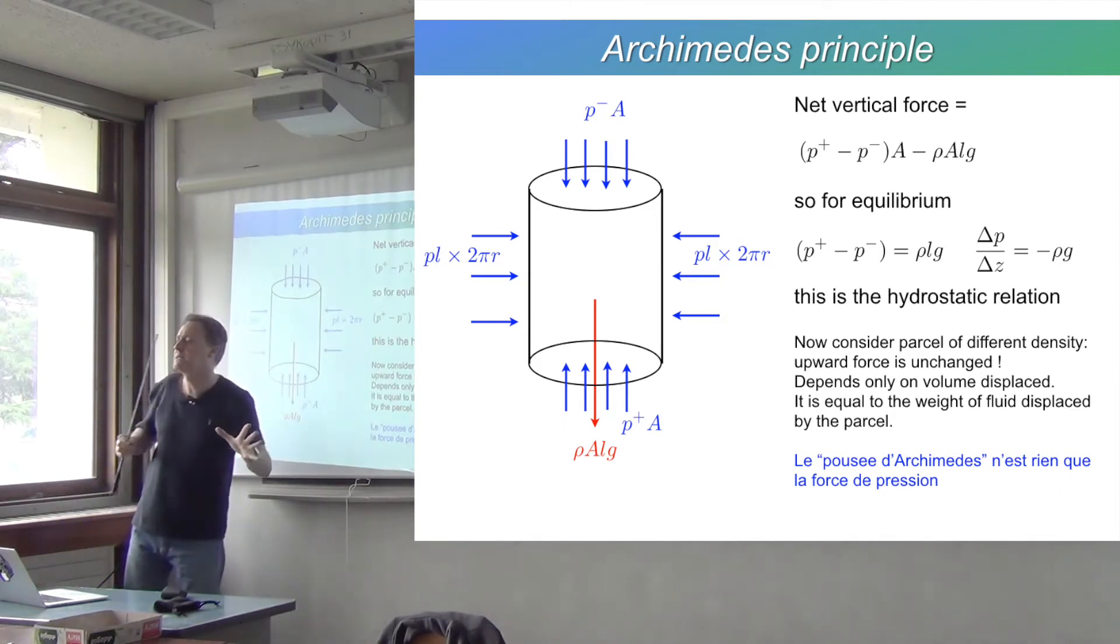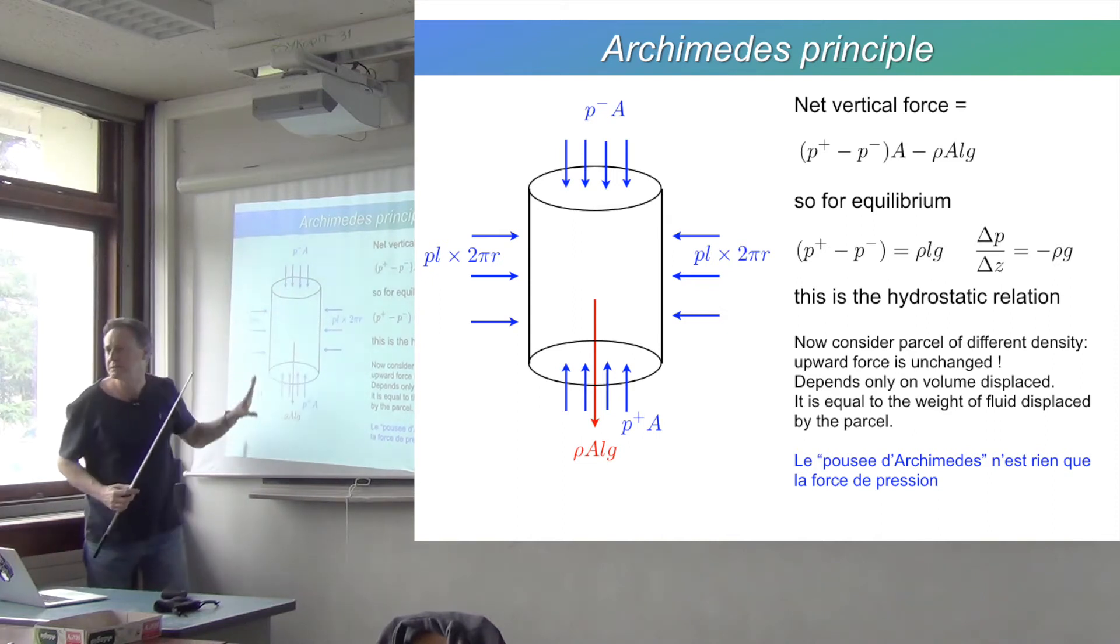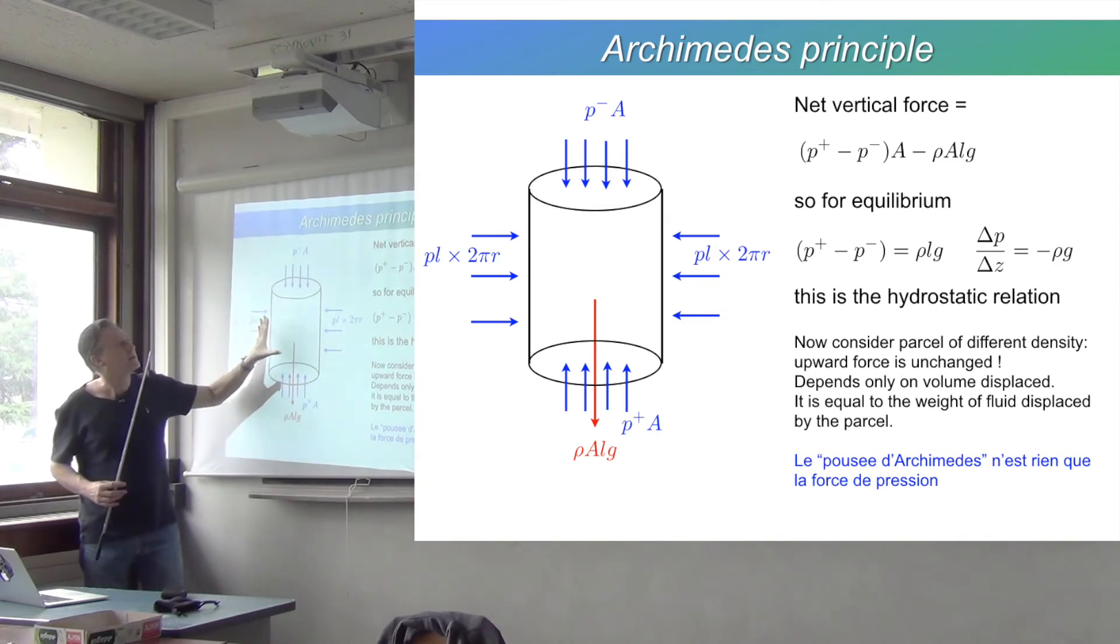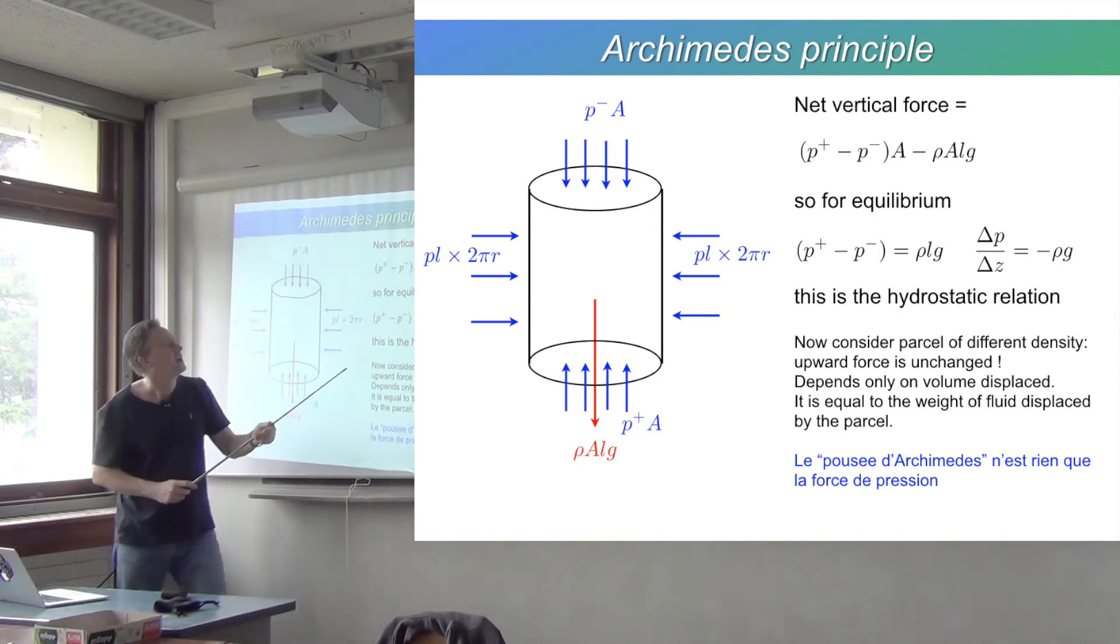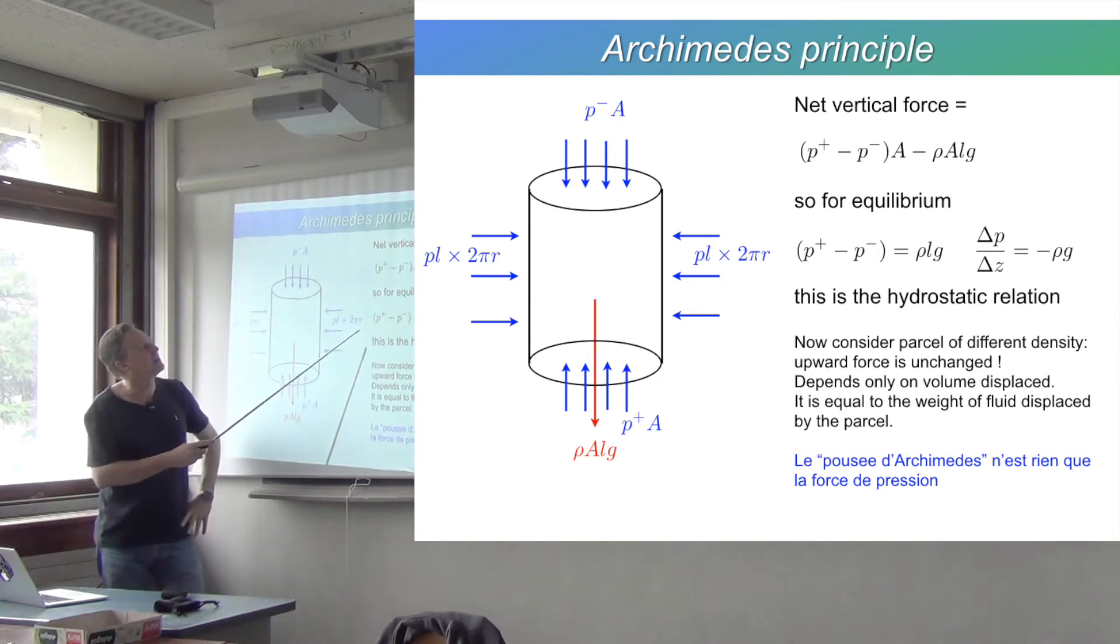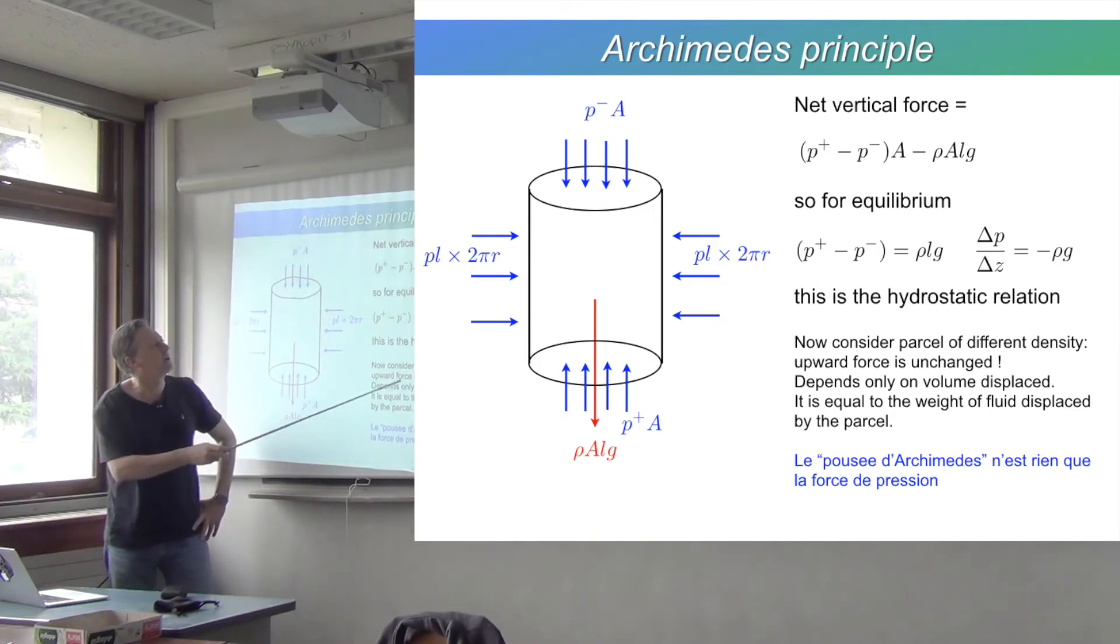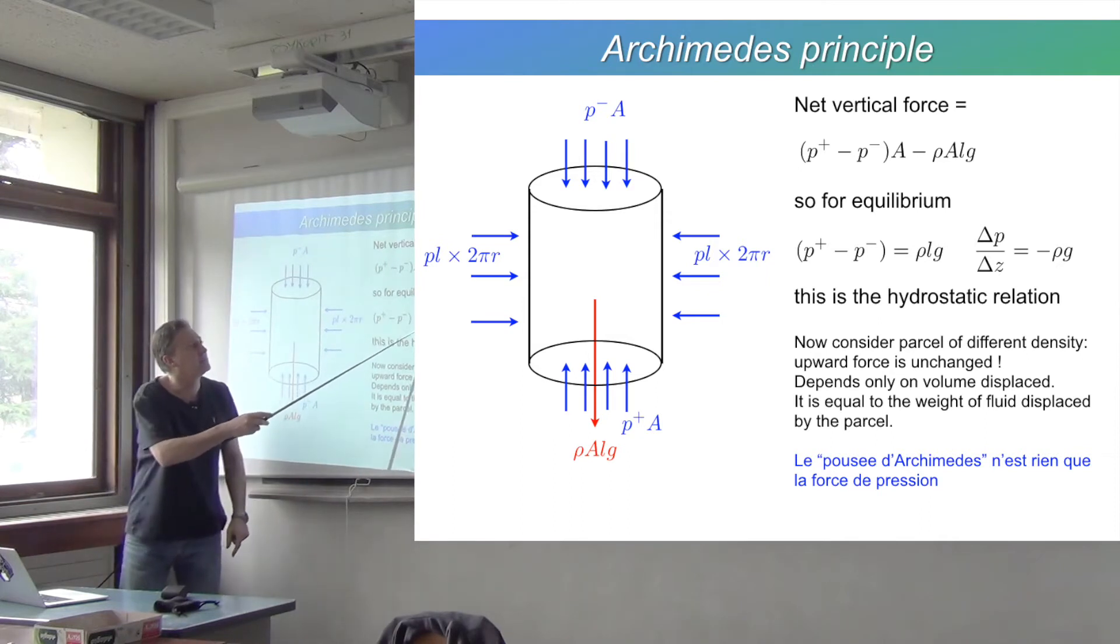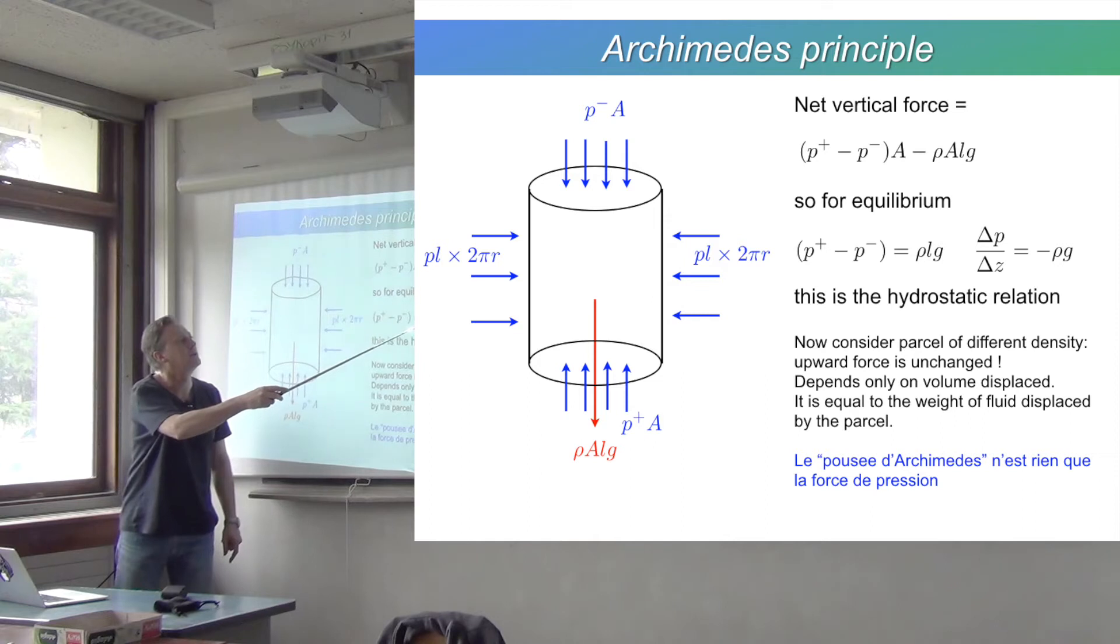At equilibrium, let's assume there's no net force on this, so this adds up to zero. That would be the case if this volume just contained water which is the same water as everything else around it. Then this ρ here would just be the density of the water, and you'd have an equality between this pressure difference and ρ times L times g.